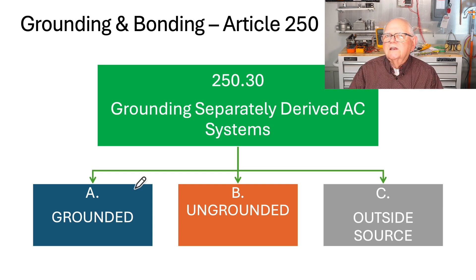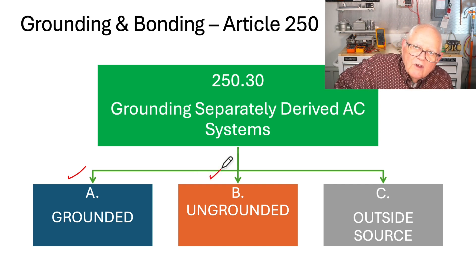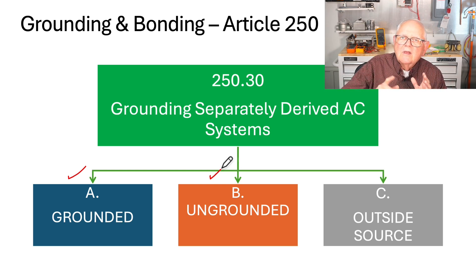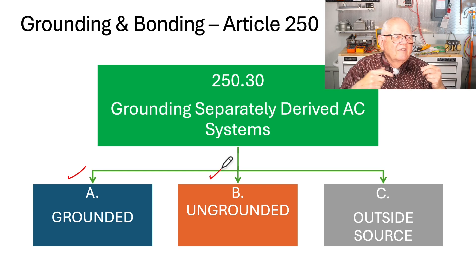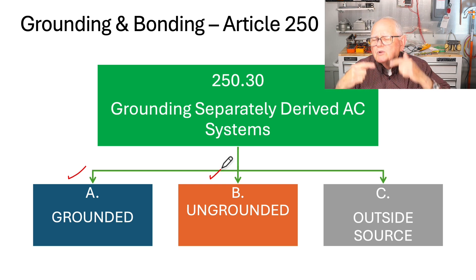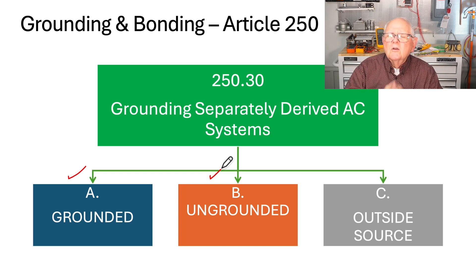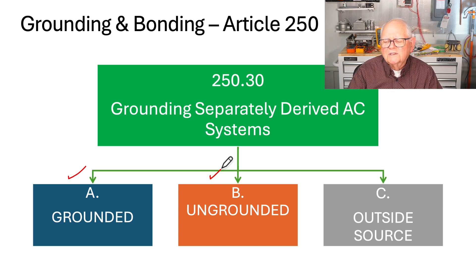Section 250.30 is divided into three separate sections. Section A is for grounded systems and Section B is for ungrounded systems. At the very beginning of 250.30, it tells you to be sure and apply 250.20 and 250.21 — which cover systems required to be grounded, systems permitted to be grounded, and systems not allowed to be grounded. Most typically we're dealing with grounded systems and are in subsection A, but B addresses ungrounded systems.